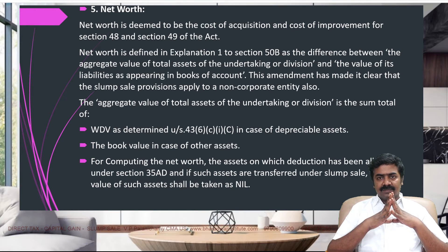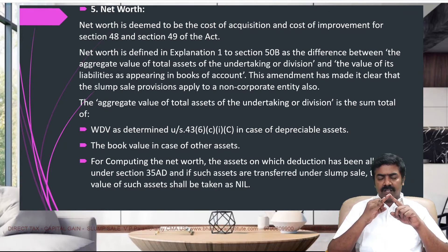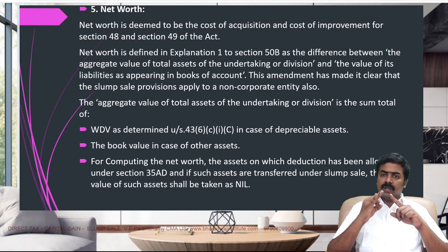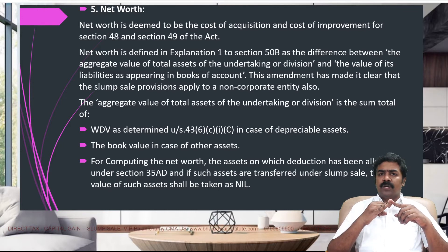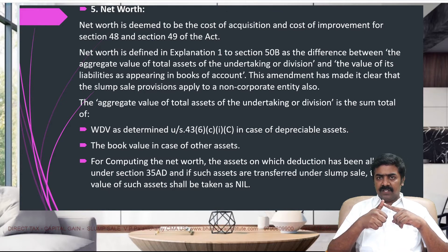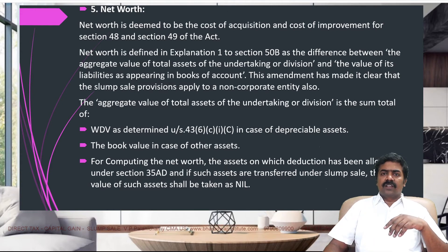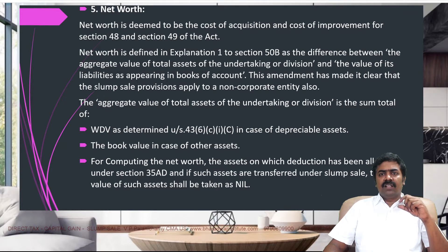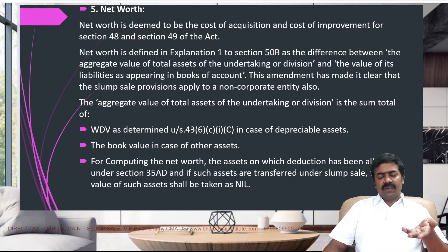So once again, how to determine net worth? For depreciable assets: WDV as per section 36, that is income tax side — opening WDV after depreciation allowable. For all non-depreciable assets: take book value at cost price, including cost of improvement if any. For all other assets — current assets or investments: take book value recorded in books. If any asset has had 100% deduction claimed already under section 35AD, book value becomes zero. Please ignore revaluation effect. Sale consideration minus expense on sale gives full value consideration minus net worth gives capital gain. If run for more than 36 months: long term, otherwise short term.